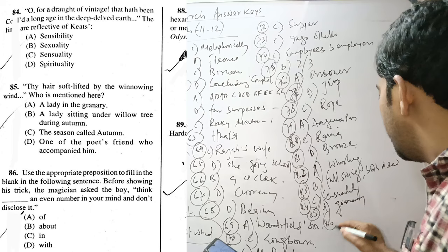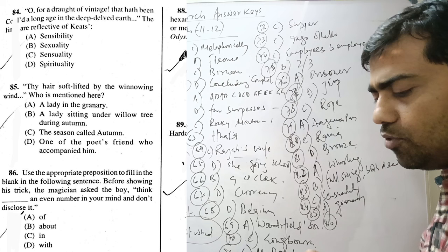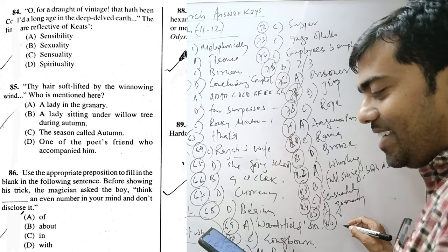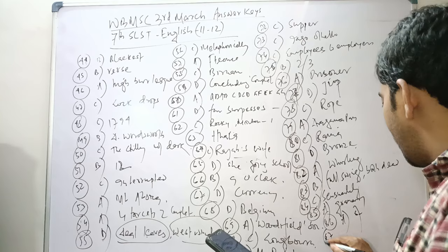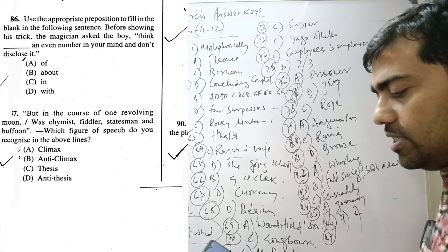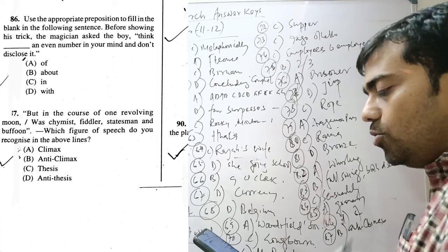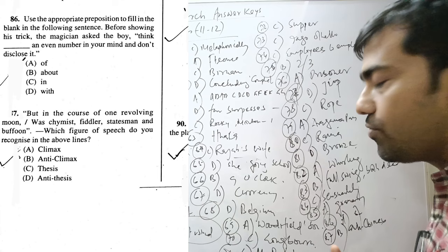Question 86. Use the appropriate preposition to fill in the blank in the following sentence. Before showing his trick, the magician asks the audience. It will be of. If an event is there, then it will be about. But here, even number. So, think of an even number. So, it is very tricky type of question. Question 87. But in the course of one revolving moon, were Chymist, Fiddler, Statesman, and Buffoon. Which figure of speech is used? Zeugma.